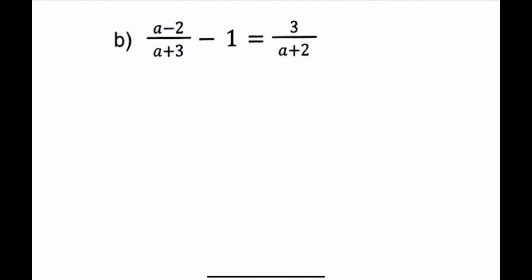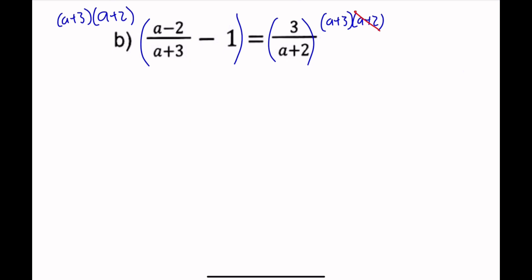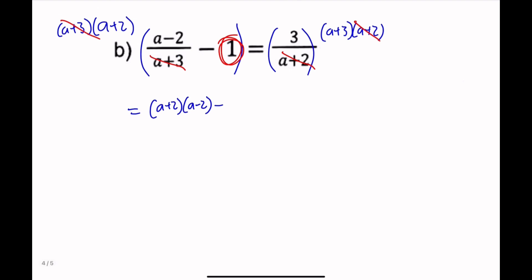For the next problem, we have denominators a plus 3 and a plus 2. So let's multiply (a+3)(a+2) to everything — to the left-hand side, and to the right-hand side. These cancel out here, and these cancel out there, leaving just a plus 2, a minus 2, a plus 2, a minus 2, minus 1 times the whole (a+3)(a+2), which equals 3 times (a+3).